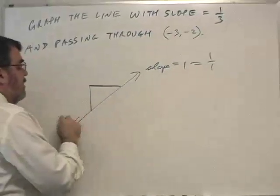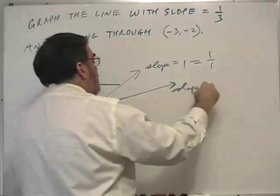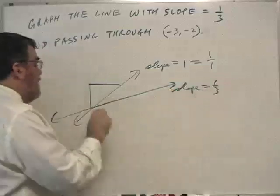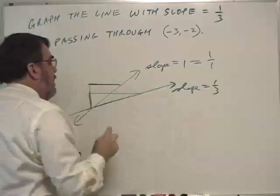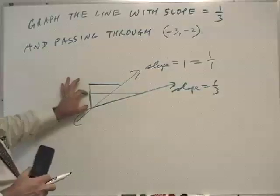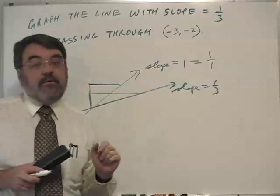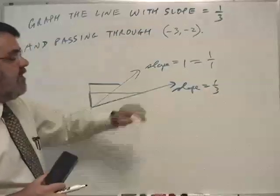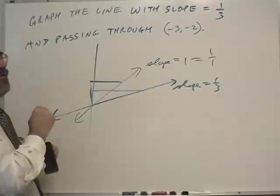Our slope of 1/3 is a little gentler. It will go off about like this because the rise to run ratio is 1 to 3, and so it rises one unit for every three units that it pushes forward. So this is a rather gentle slope, and a steep line would have a larger number.